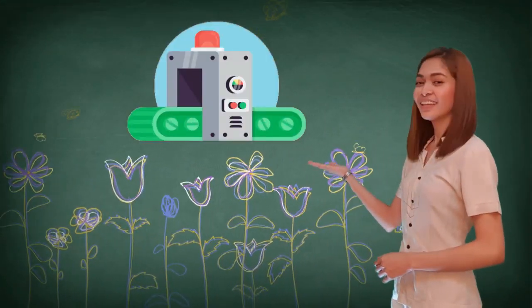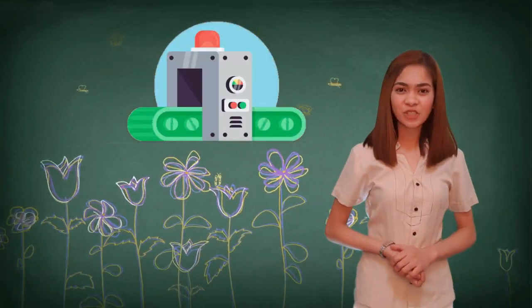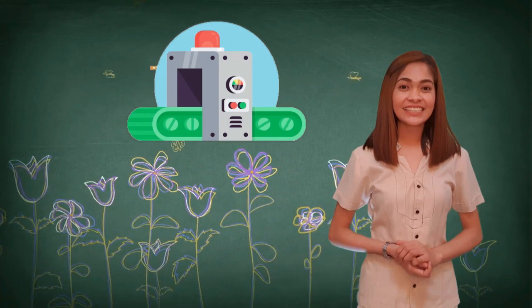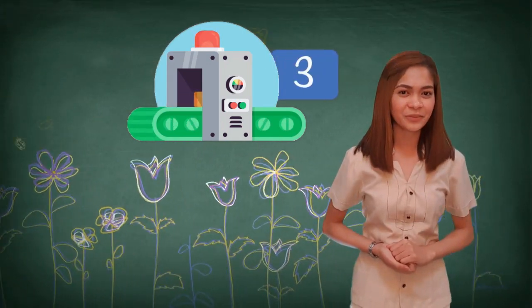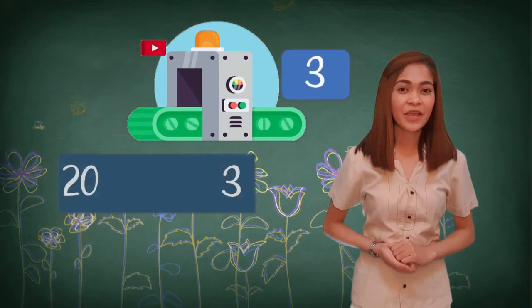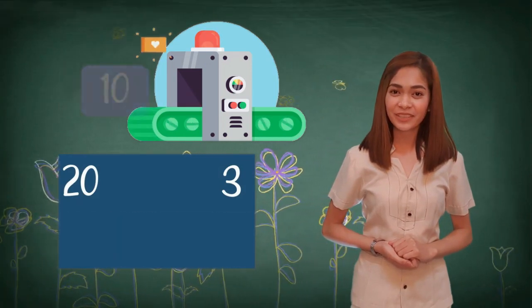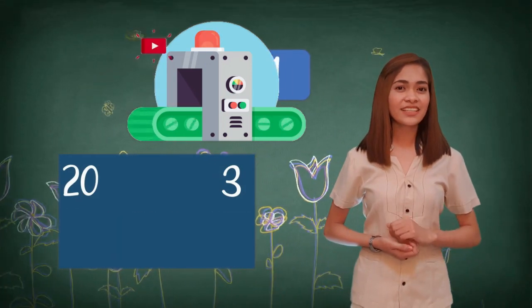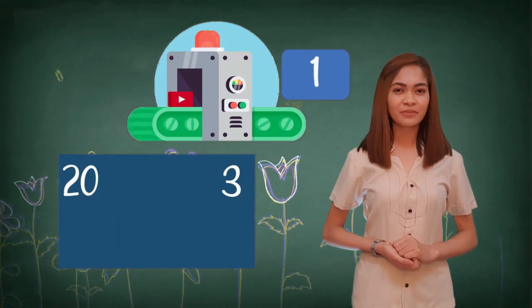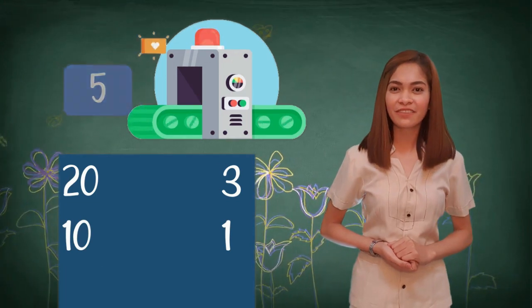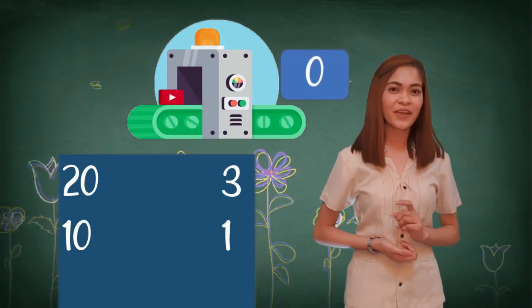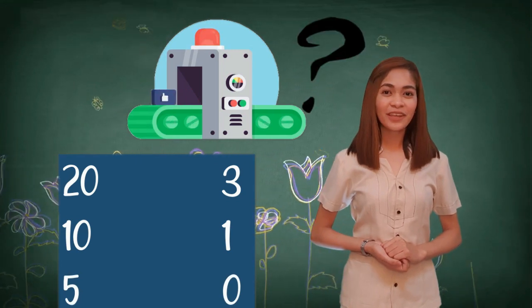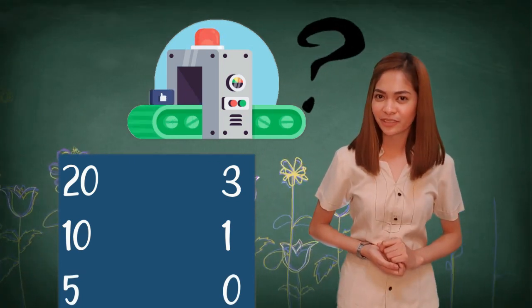Let's examine this machine and try to figure out its function. Say we input 20 and the machine gave us 3 as the output. We have 10 as another input and the machine gave us 1 as the output. And we have 5 as our last input leading to 0 as the output. What do you think is the machine's rule?